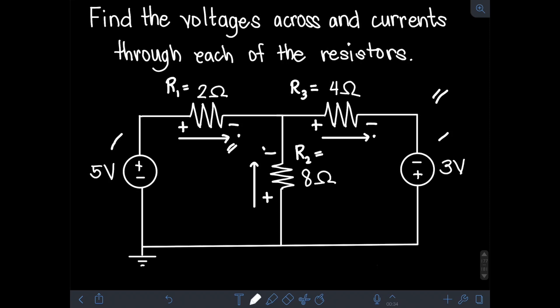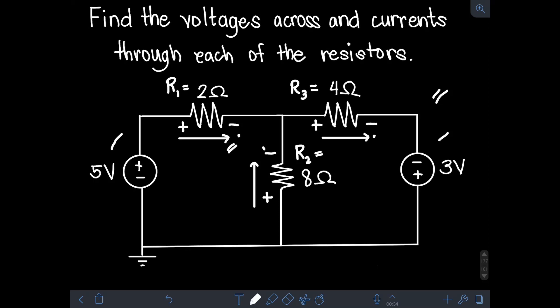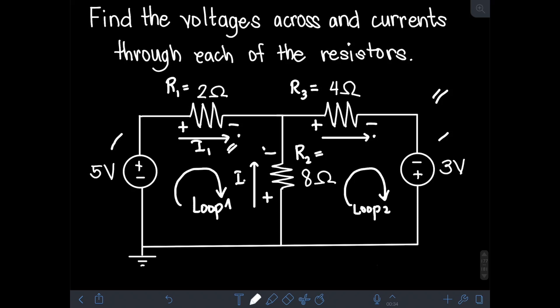After that, we will also assign the direction for the loops. We have two loops. It can be clockwise or counterclockwise, but it's easier if we assume the same direction for each loop. Let's assume a clockwise direction for both loops. Let's name them loop 1 and loop 2. Also, let's name the current for R1 as I1, for R2 as I2, and for R3 as I3, as well as the voltage drop across R1 as V1, across R2 as V2, and across R3 as V3.